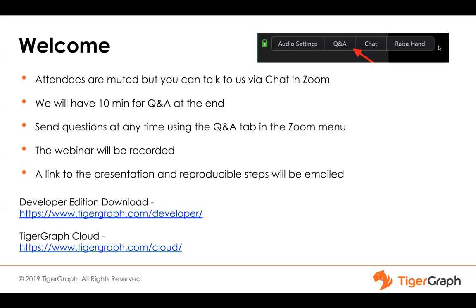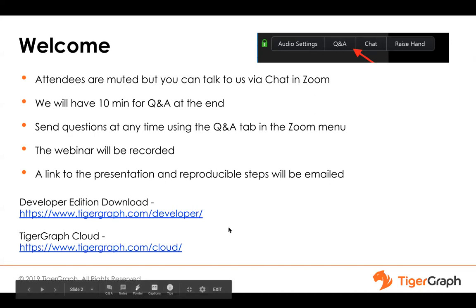You can reproduce that example with the developer edition, which you can get for free. Some of this you can also do on TigerGraph Cloud, which we invite you to take a look at — either at tigergraph.com/developer or /cloud.